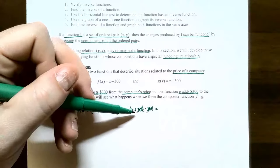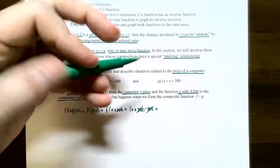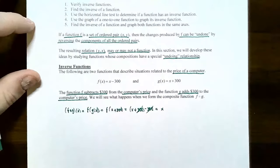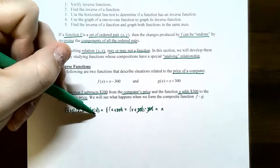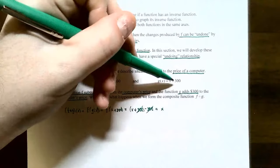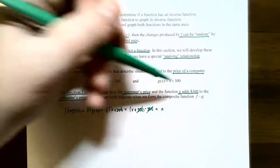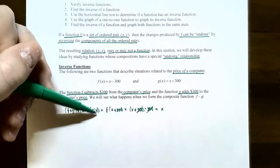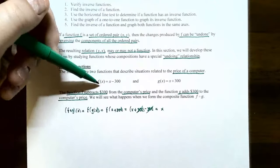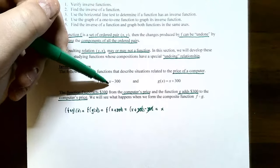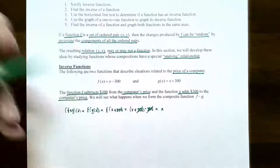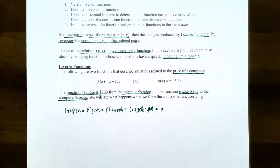The 300s undo each other — one is adding 300 and the other is subtracting 300 — so you just get x back. Whatever g does to the original price, adding 300 to get the y value, the function f just undoes it. It subtracts the $300 that was already added, and you get the original price of the laptop back.